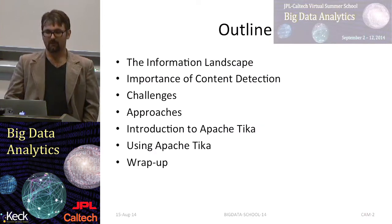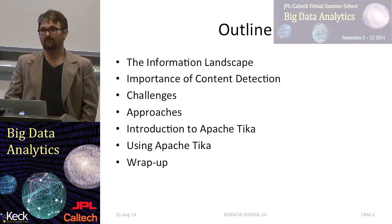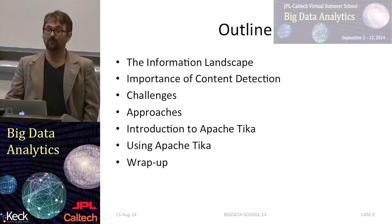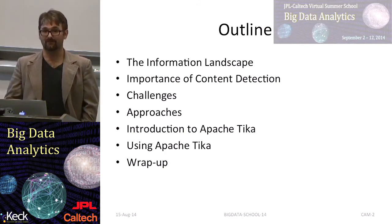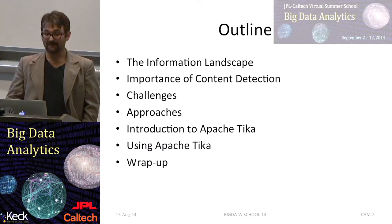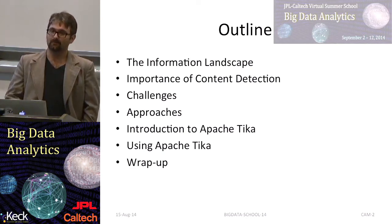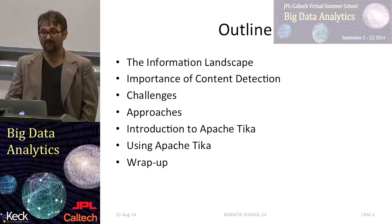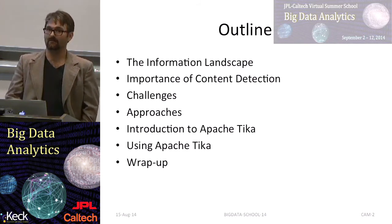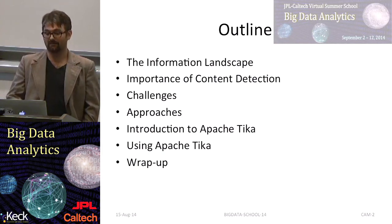In the first part of this module, we covered the importance of file types — how there are so many, by some estimates 18 to 51,000 different types out there and growing. We covered why it's important to do content type detection: to parse text, to parse metadata, and to identify language in all of these different contents that you find in your big data systems.